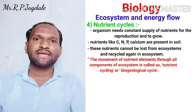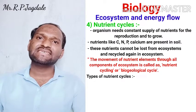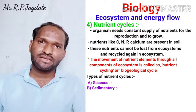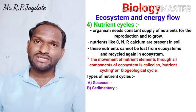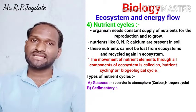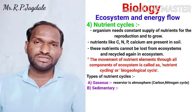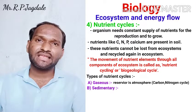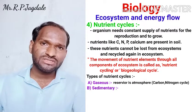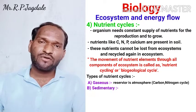There are mainly two types of nutrient cycles. The first is the gaseous type of nutrient cycle, where the reservoir is the atmosphere — all gases are present there. Examples of gaseous nutrient cycles are the nitrogen cycle and the carbon cycle.